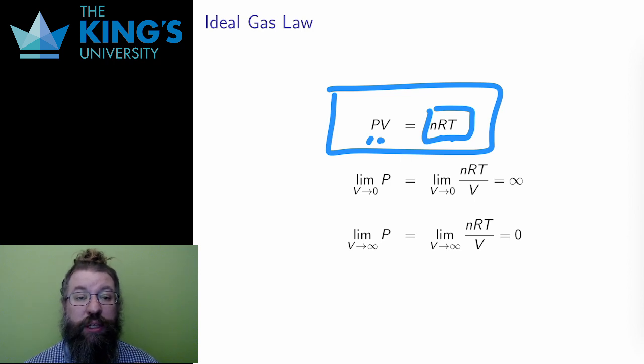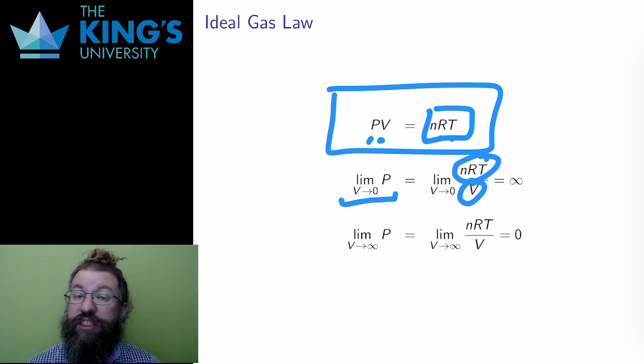Then I can ask for limits. I can ask, for example, what happens to the pressure as the volume goes to zero? This is an extreme situation, asking what happens to the gas as I make the container for it smaller and smaller. I get a limit with a constant numerator and a denominator shrinking to zero. A fixed number divided by a smaller and smaller number gives a larger and larger number, so this will diverge to infinity.